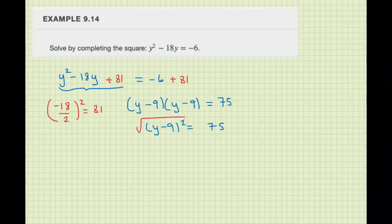Alright, so take the square root of this side, plus or minus square root of this side. We have y minus 9 equals—let's see, 75 is 25 times 3, so y minus 9 is plus or minus 5 square root of 3.